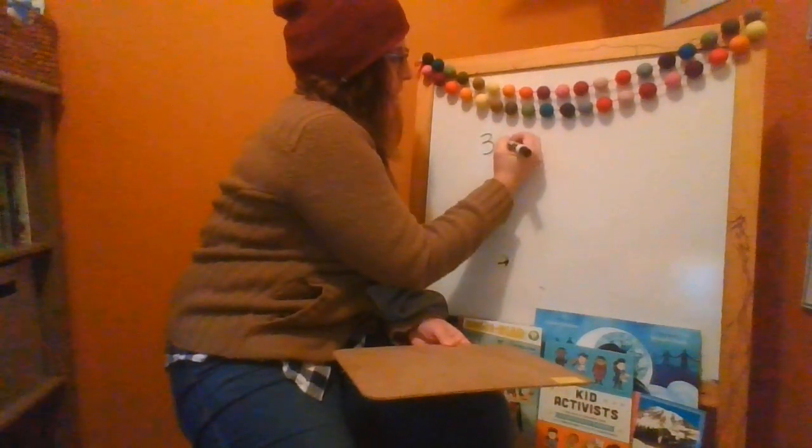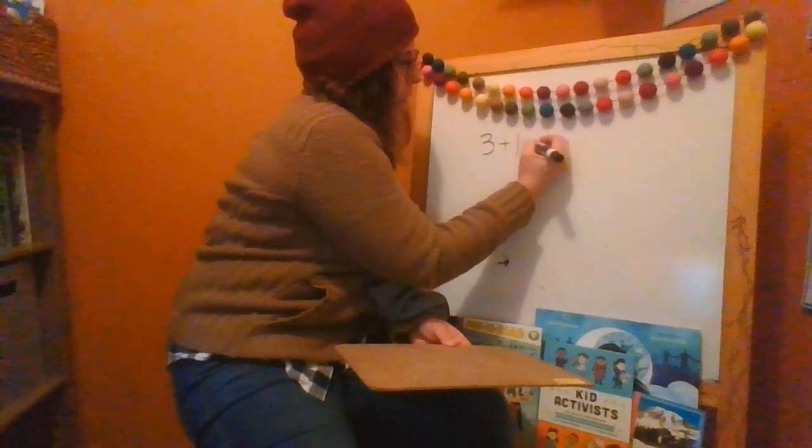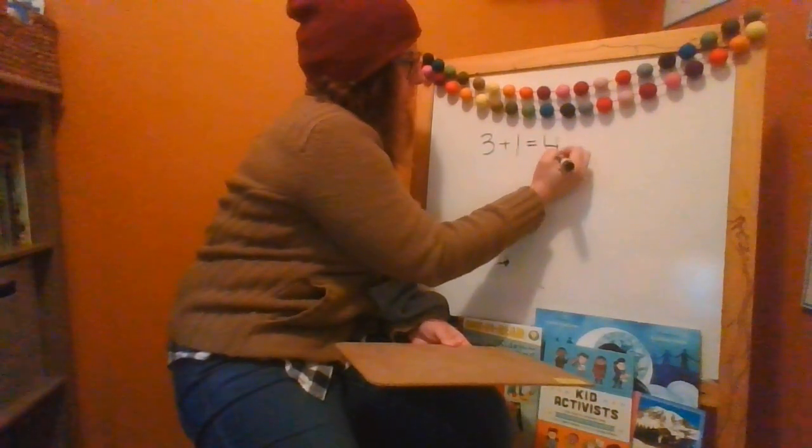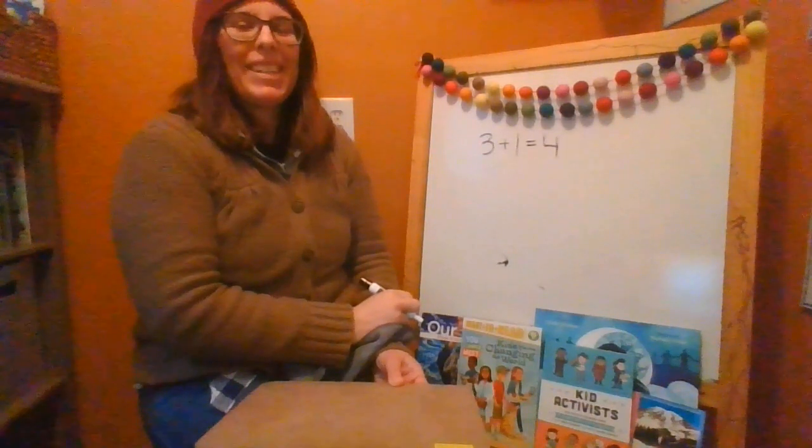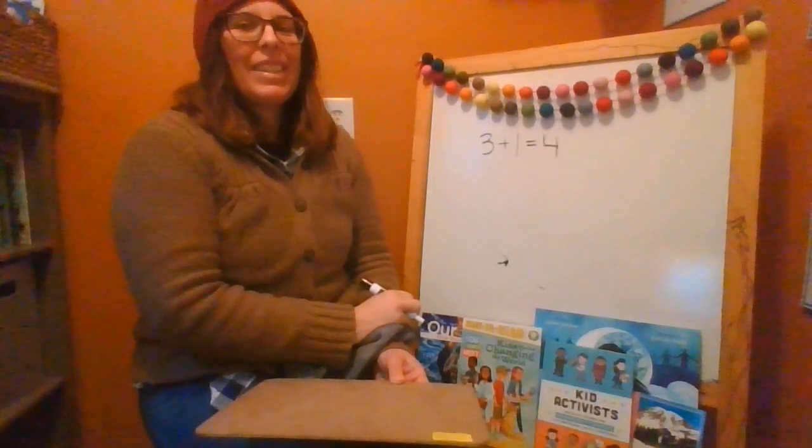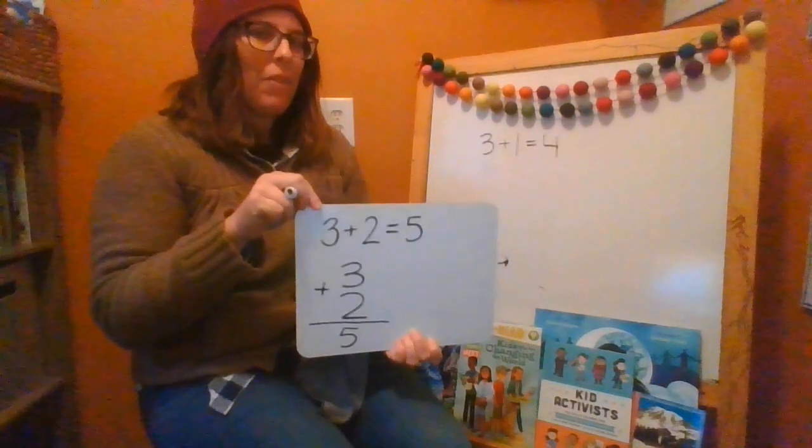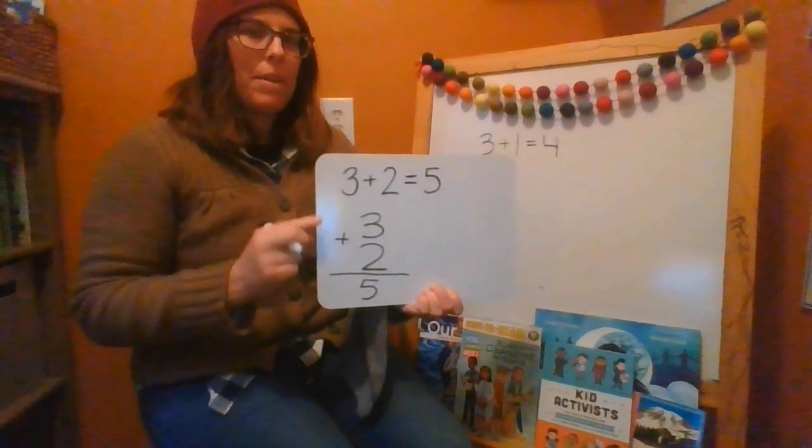Okay, here it is going side to side. 3 plus 1 equals 4. And then you write it going up and down. So you don't want your white board. You might have to pause me for a minute to take your white board and write it going up and down.